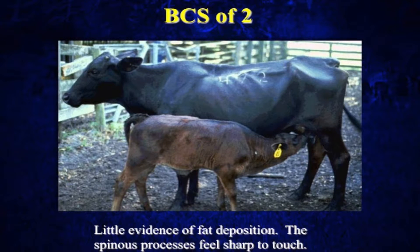As we go through some slides, we've got a body condition score two cow here, and you can see she's very emaciated. She's lost all fat cover under the hide all over her body. She's actually lost some muscle mass as well, down her top and in her hip. You can see she's almost to the point where if we just pulled the hide off, we've got a skeleton hanging out there. At a body condition score two, that's really too thin.